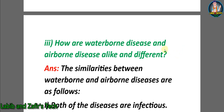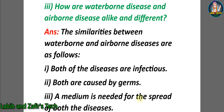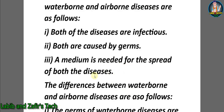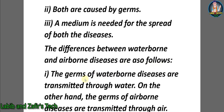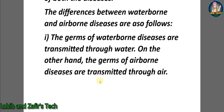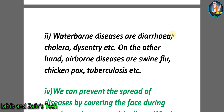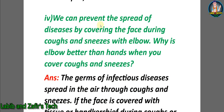Question three: how are waterborne diseases and airborne diseases alike and different? Similarities: both are infectious, both are caused by germs, and a medium is needed for the spread of both. Differences: the germs of waterborne diseases are transmitted through water, while the germs of airborne diseases are transmitted through air. Examples of waterborne diseases are diarrhea, cholera, dysentery, etc., while airborne diseases include swine flu, chickenpox, tuberculosis, etc.